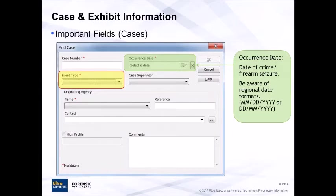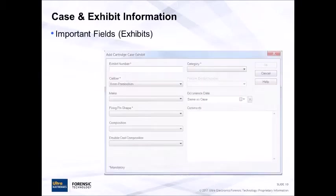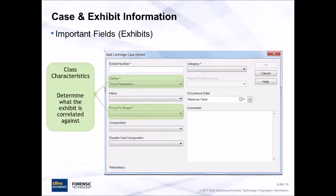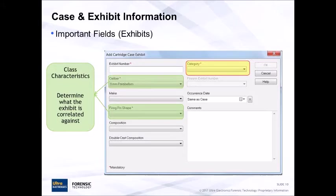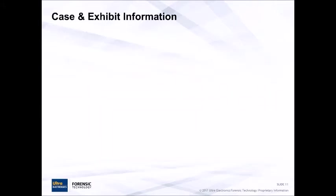Now looking at the Add Exhibit dialog box — all information should be accurate, but the really critical fields are calibre, firing pin shape, and category. The calibre and firing pin shape are the class characteristics that will determine how this exhibit correlates within the database. A mistake here could cause big problems down the road on match point. The category is also a correlation parameter and, along with the occurrence date, will influence what exhibits our reference is compared to.